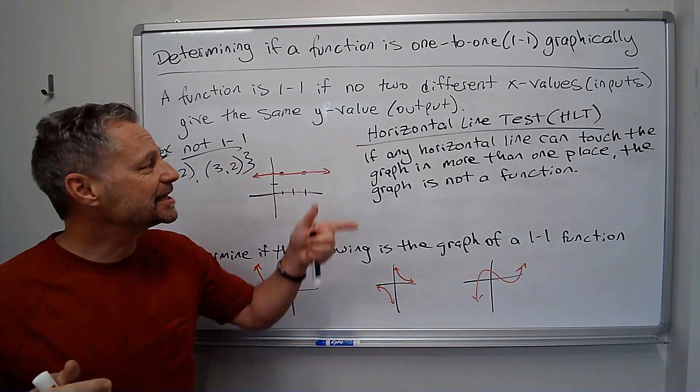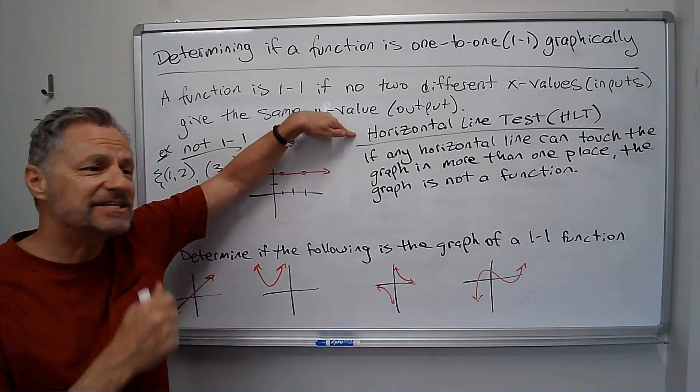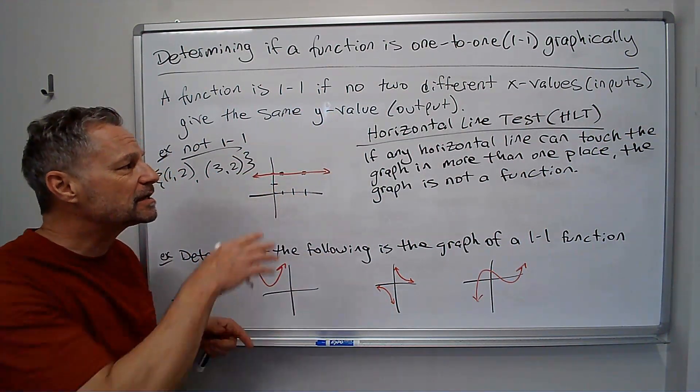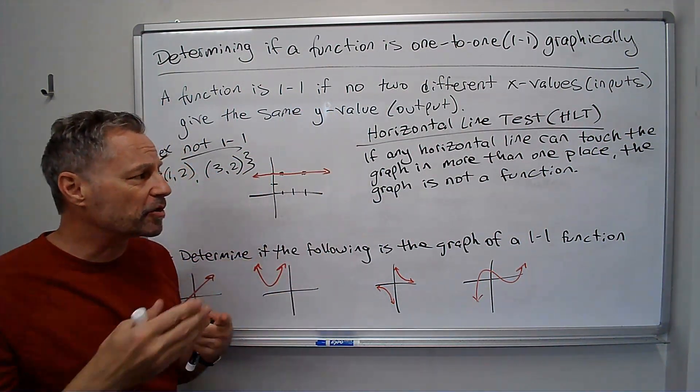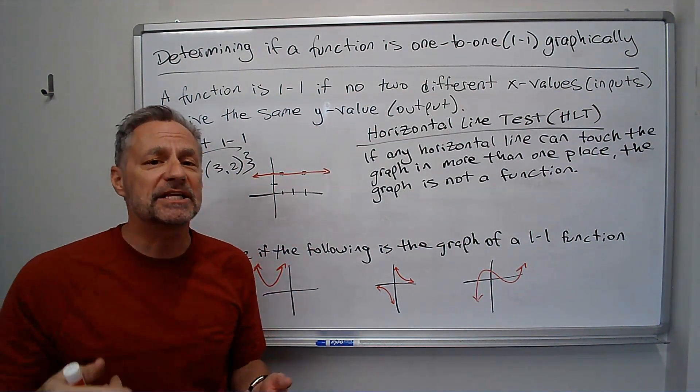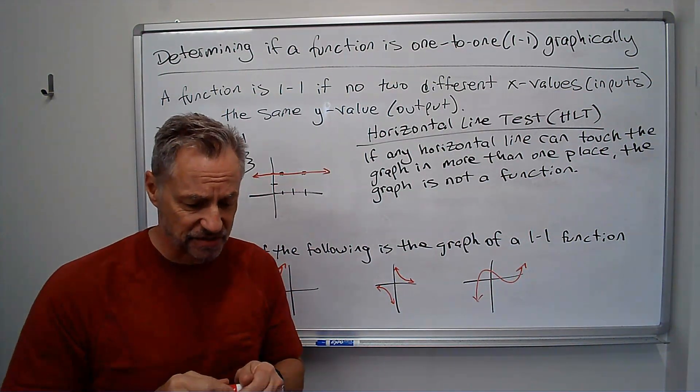And we, interestingly enough, call that the horizontal line test or the HLT. And it says what I just said. If any horizontal line can touch the graph in more than one place, the graph is not a function. So we can quickly use that to determine if graphs are functions. Let me show you.